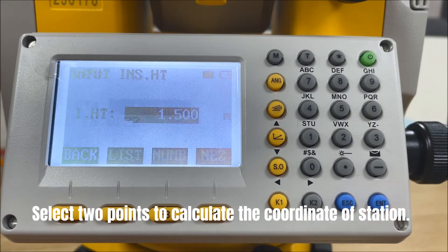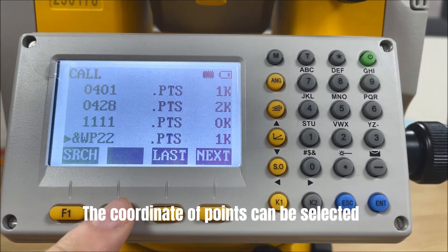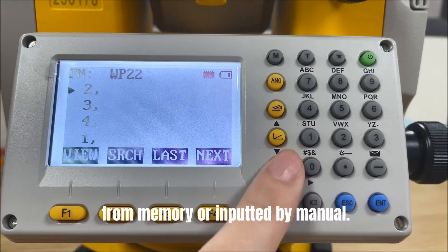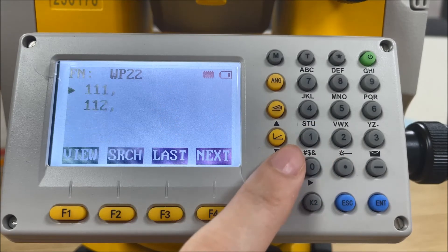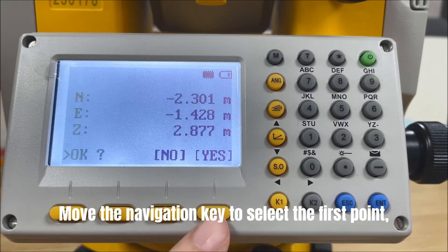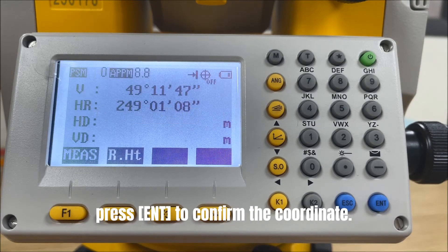Select two points to calculate the coordinate of station. The coordinate of points can be selected from memory or inputted by manual. Move the navigation key to select the first point, press enter to confirm the coordinate.